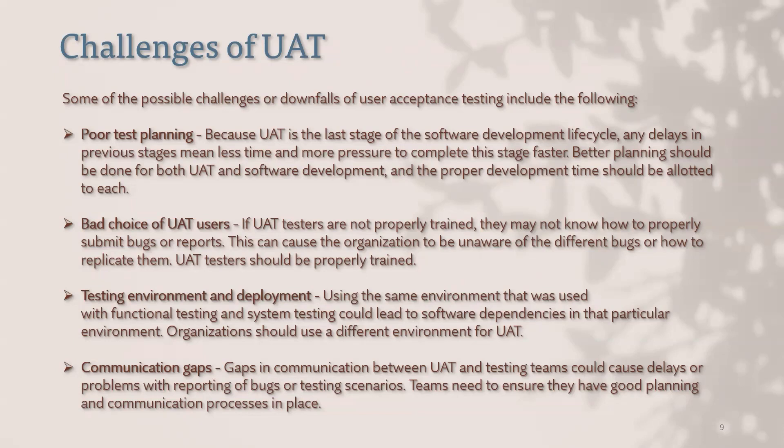The second challenge is a bad choice of UAT resources. This works best when team members have domain knowledge relevant to the project. For example, if team members are from the banking and finance domain but the current project is from the media domain, they may lack full familiarity and miss required scenarios — especially if test cases and test plans are not well-equipped. The third challenge is the testing environment: using the same environment as functional and system testing could lead to software dependencies. It is generally preferable to have a separate UAT environment that is an exact replica of the production environment.